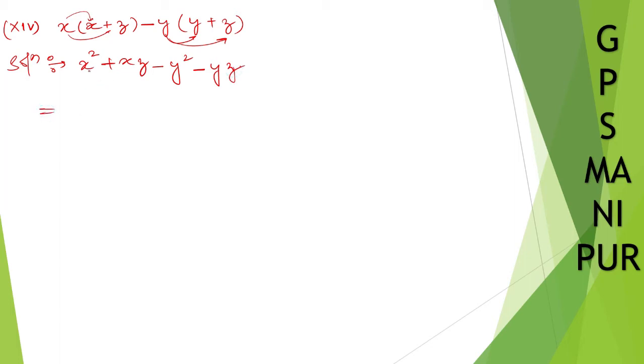I think we can do something here. x square, write down x square, take y square here. So minus y square plus xz minus yz.